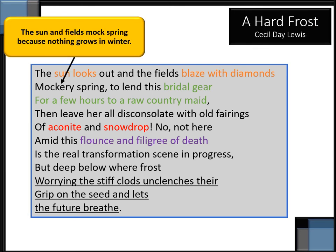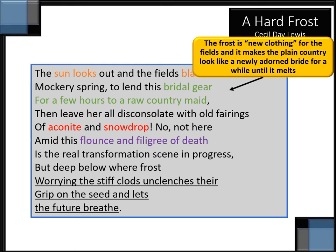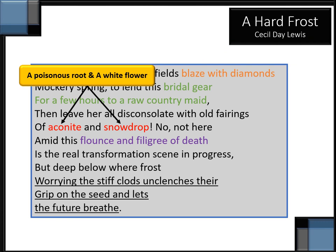The phrase 'mockery spring' here indicates that the fields mock spring, because nothing grows in winter, and in spring everything is supposed to come alive. To lend this bridal gear for a few hours to a raw country maid — the frost is seen as new clothing for the fields, and it makes the plain country look like a newly adorned bride for the moment, until it melts. Also the bright white color is linked to the bridal gear. Then leave her all disconsolate with old fairings of aconite and snowdrop — a poisonous root and just a white flower. Not the real thing.